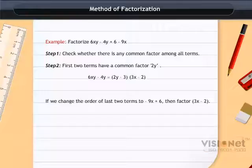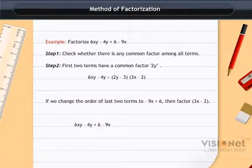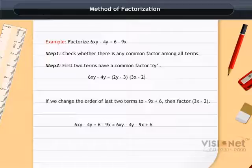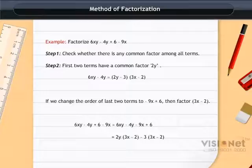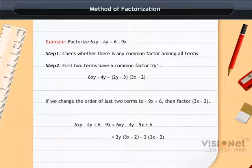Now, put the factors of all the terms together. 6xy - 4y + 6 - 9x = 6xy - 4y - 9x + 6 = 2y(3x - 2) - 3(3x - 2). Take the common term (3x - 2). Then the expression changes to (3x - 2)(2y - 3).